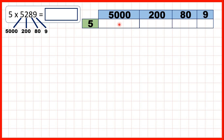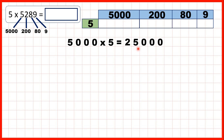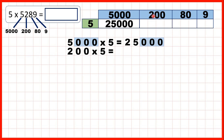Now for this box here we need to work out 5,000 times 5. That's 25,000 because 5 times 5 is 25 and then we need 3 end zeros. Here we need to work out 200 times 5. That's 1,000 because 2 times 5 is 10 and then we need 2 end zeros.